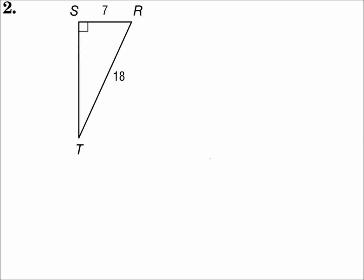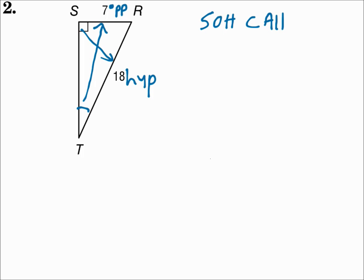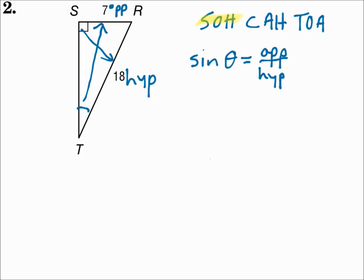Number 2 — again solving for the measure of angle T. Identify the sides: the side across from angle T is opposite, and the side across from the right angle is the hypotenuse. So should I use sine, cosine, or tangent? Remember SOH. Since I'm using opposite and hypotenuse, that's SOH — sine. Sine of theta equals opposite over hypotenuse.